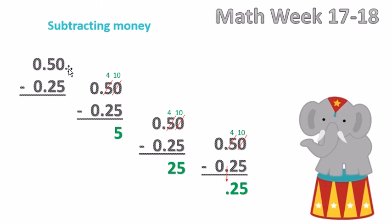Our problem today is 50 cents minus 25 cents. So the first thing we're going to do is work with the ones place here, which is a 0 minus 5.